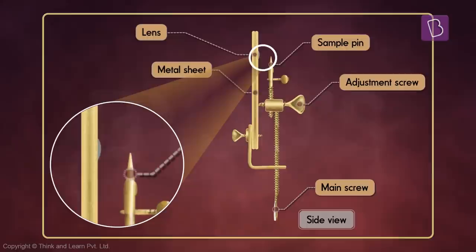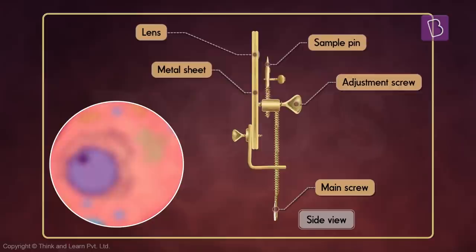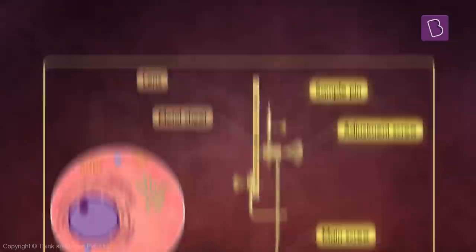Then by turning the screw he called the adjustment screw, he could adjust the distance of the sample from the lens. This helped him focus the image much better simply by adjusting the distance between the sample and the lens. All the screws and the different ways of adjusting the sample and image made this microscope way more complicated and much more superior to Hooke's microscope.